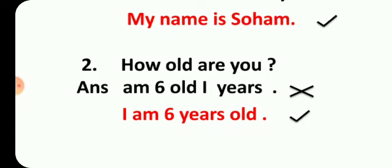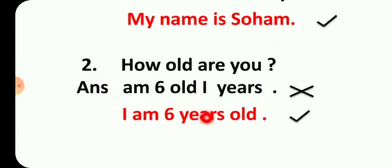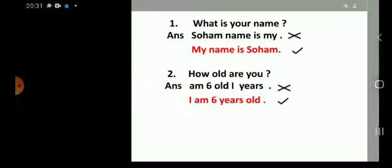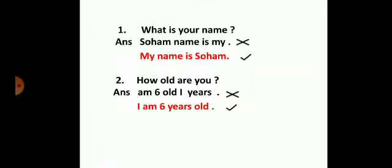Again we will see another example. How old are you? If you say 'I 6 old years' — again does it make any sense? No. So we will arrange these words to make a meaningful sentence: 'I am 6 years old.' So children, I hope you have understood this concept. You have to arrange the given words in order to make a meaningful sentence. This is our next exercise.